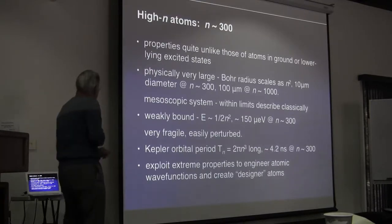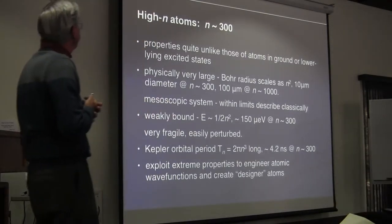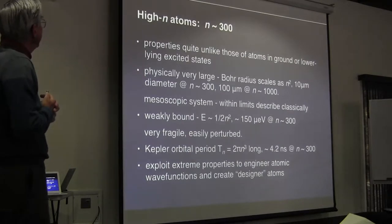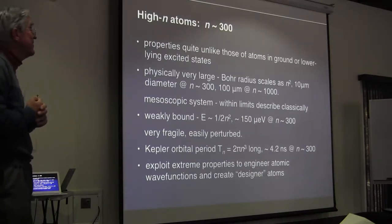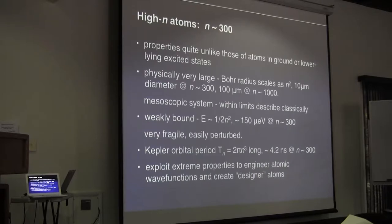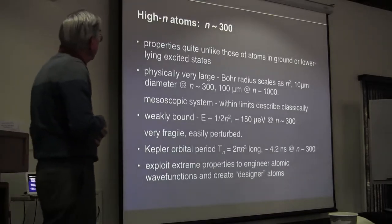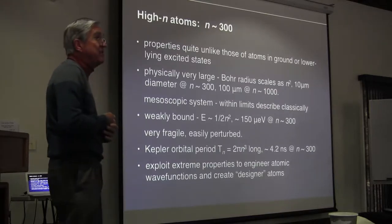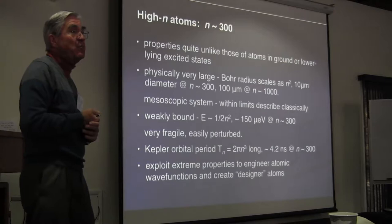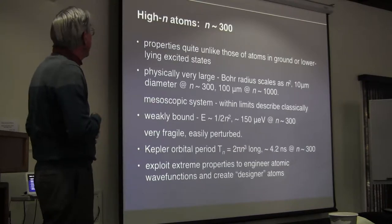The work I will describe is atoms in very high-n states — n equals 300 and above. Typically we'll be talking about atoms with n of 300 through about n of 600. These have properties quite unlike those you would normally associate with atoms in ground states or even lower-lying excited states. Physically, they're extremely large. The Bohr radius scales as n squared, so by the time you get to n equals 300, you're dealing with an atom which is 10 microns in diameter. By n equals 1000, it's 100 microns in diameter — if these things were opaque, you would see them with the naked eye. So we're dealing with a mesoscopic system, not a nanoscopic system.